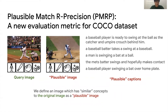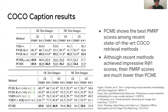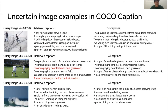We observe that our proposed approach, PINGMI, shows the best PMRP score among the state-of-the-art methods with comparable LICRABON scores. This implies that previous methods focused on optimizing LICRABON, not precision scores. We also visualize the uncertain images and the retrieved items by PINGMI, and observe that the retrieved items are plausible even if they are not the ground-truth captions.